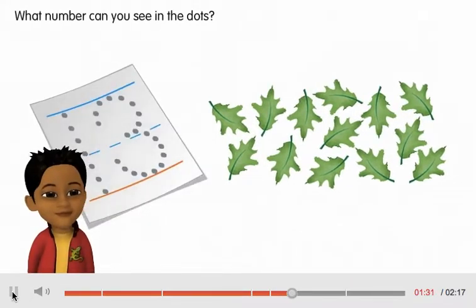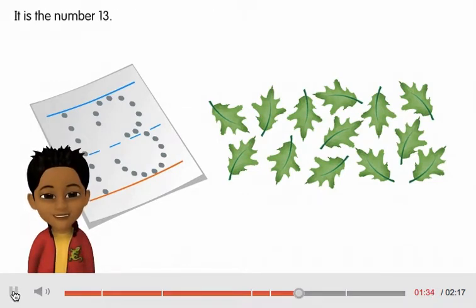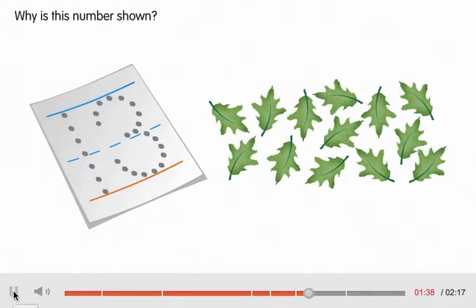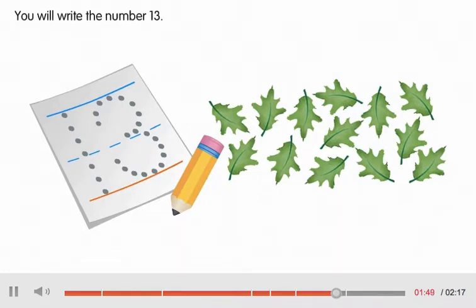What number can you see in the dots? It is the number 13. Why is this number shown? 13 is how many leaves there are. If you trace the dots, what number will you write? You will write the number 13.